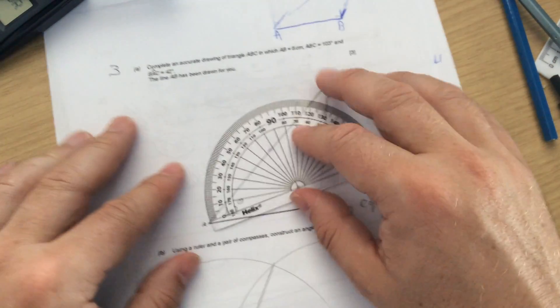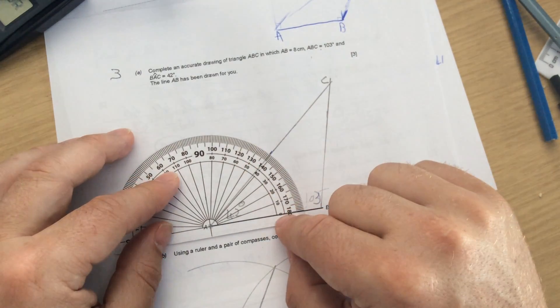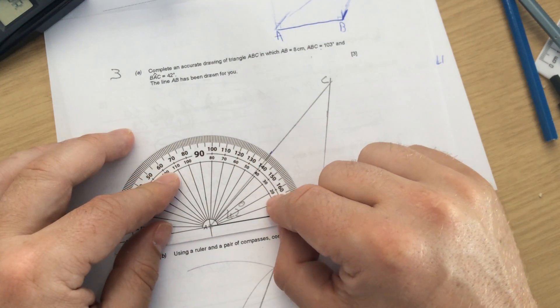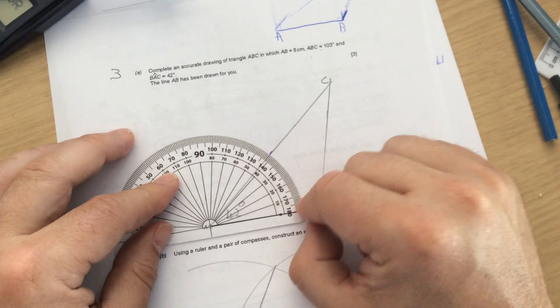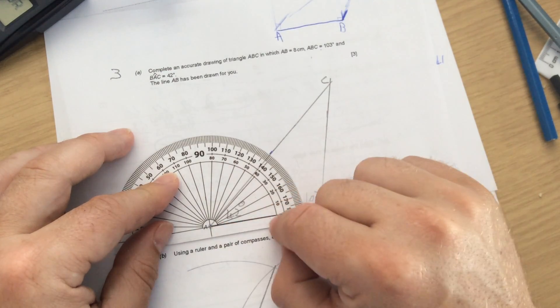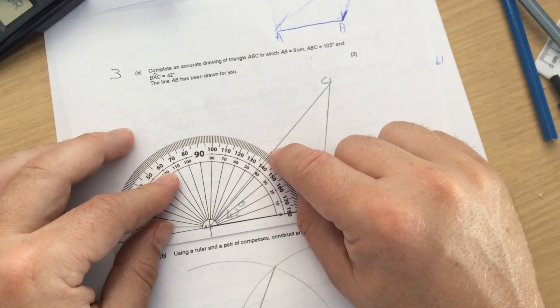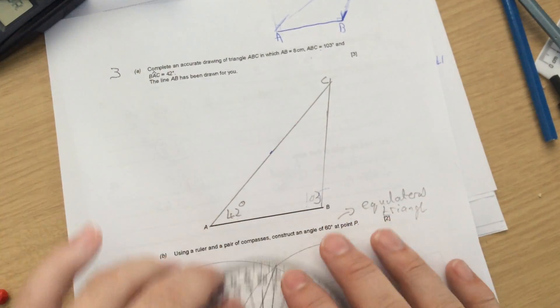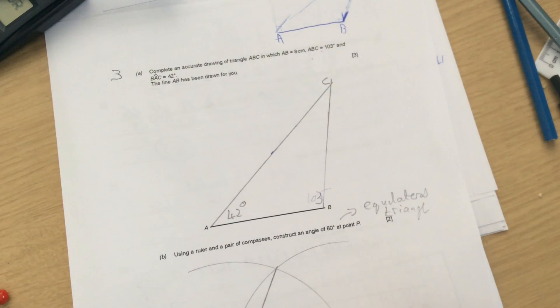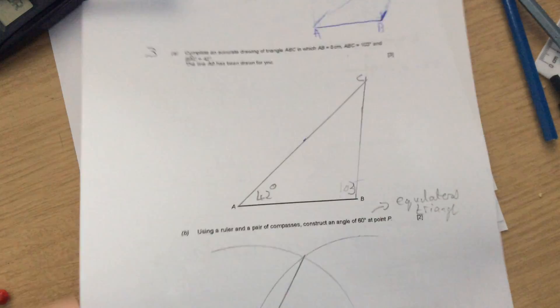The next one is 42 degrees from A. So 42 from A, 0 is on the inside now, so you're using the inside numbers. 0 is lined up, A is on the point, you've got 40, 41, 42. You would mark 42, join them up, and where they meet would give you point C.